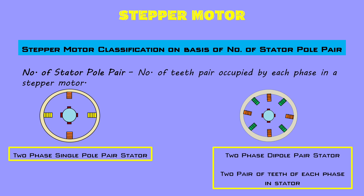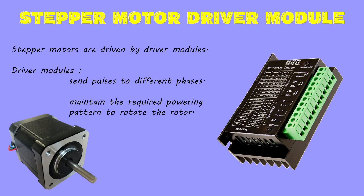In the first figure it's a two phase single pole pair stator type stepper motor. In the second figure, as two teeth pairs are of the same phase represented by green and orange colors, this one is a two phase dipole pair stator type stepper motor. Stepper motors are driven by driver modules, which are responsible for sending pulses or powering on different phases of the stator in a specific pattern to rotate the rotor.